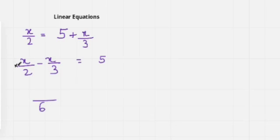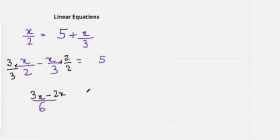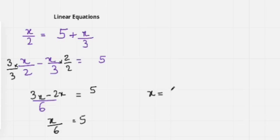I multiply the first fraction by 3 and the second by 2 to make the denominator 6. I get 3x minus 2x over 6 equals 5, which simplifies to x over 6 equals 5. Since 6 is dividing, on the other side it will multiply: x equals 5 times 6, so x equals 30.